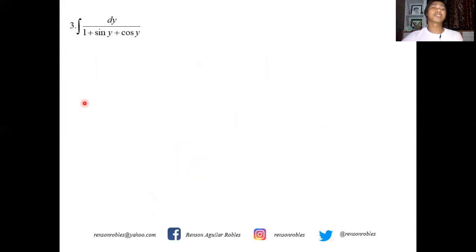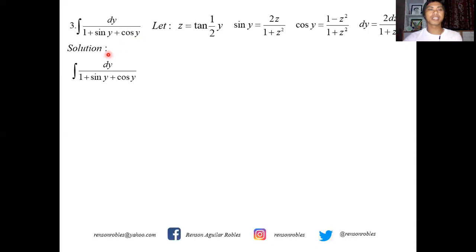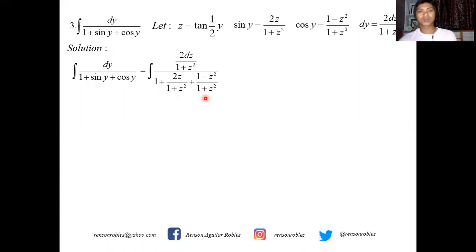For the next example, we integrate dy over (1 + sin y + cos y). The variable of integration is y, so we let z equal tangent of half y. We have sine y equals 2z/(1+z²), cosine y equals (1−z²)/(1+z²), and dy equals 2dz/(1+z²). Substituting everything in, the integrand becomes [2dz/(1+z²)] all over [1 + 2z/(1+z²) + (1−z²)/(1+z²)].